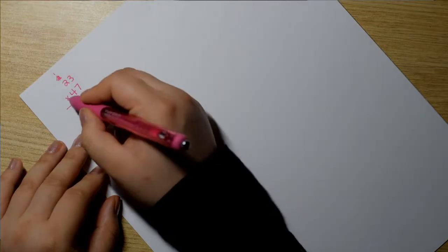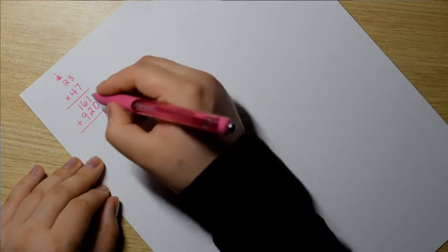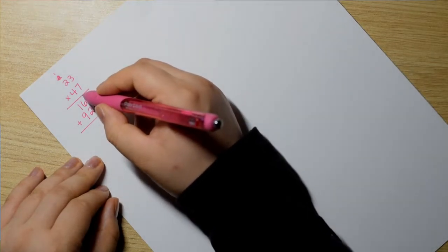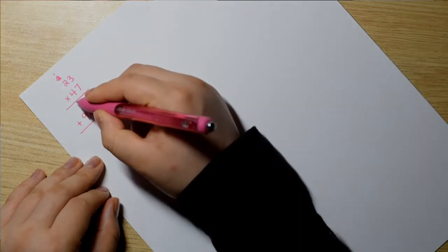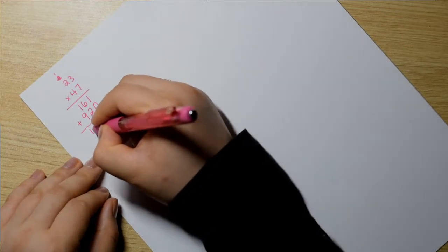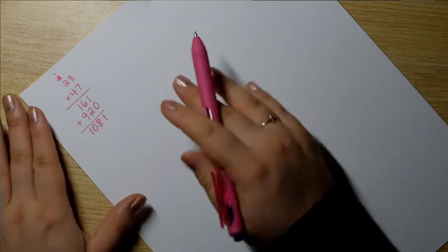Then I'm going to do 4 times 2 is 8. And then plus my 1 is 9. And now I just add because there are no other digits. So add 1 plus 0 is 1. 6 plus 2 is 8. Awesome. 1 plus 9 is 10. And our answer is 1,081. Cool.